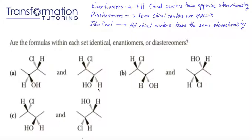The official definition of enantiomers is that they are non-superimposable mirror images. However, that's not really going to help us much, so I'm going to give you a little trick. When you have enantiomers, all chiral centers in them will have the opposite stereochemistry. So, for example, if I have molecule A with a chiral center configuration R and molecule B with a chiral center configuration S, because they have opposite stereochemistry, they're enantiomers of one another.